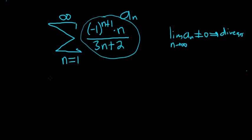So in this particular case, when we take the limit as n goes to infinity of negative 1 to the n plus 1 times n over 3n plus 2,